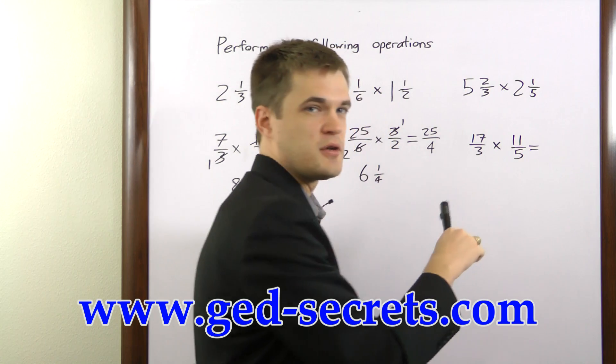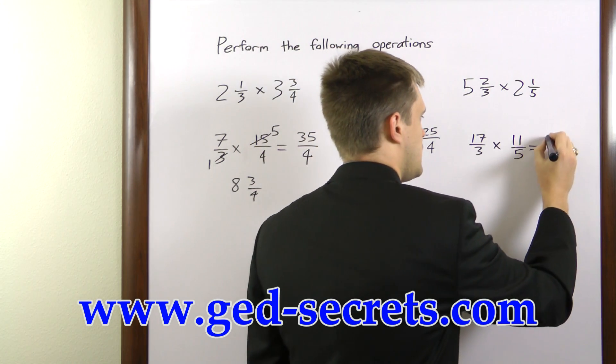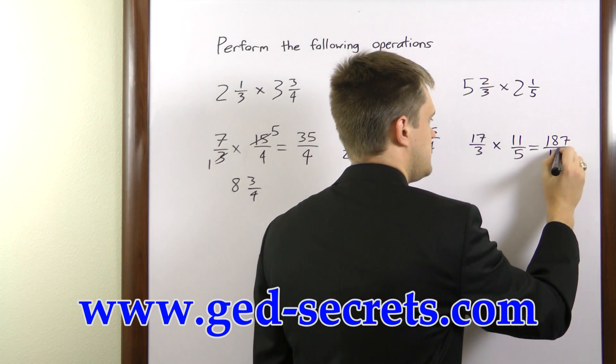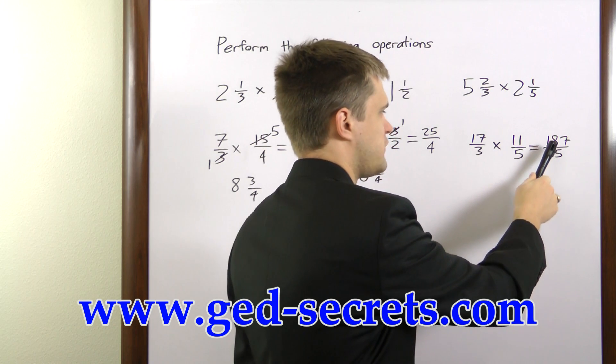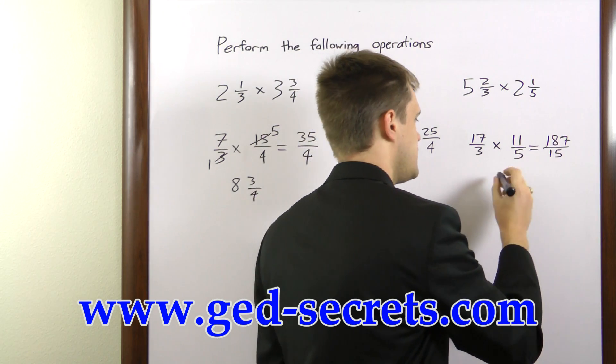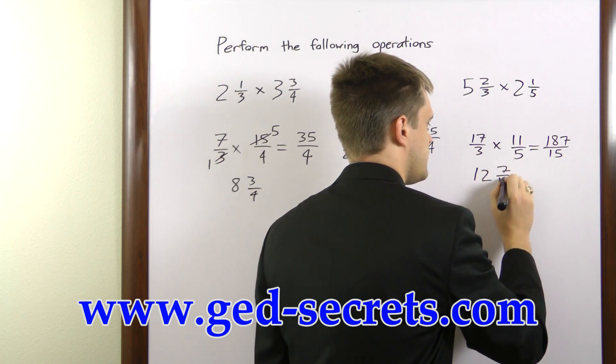There's nothing to cancel here, so we'll just go ahead and multiply. 17 times 11 is 187. 3 times 5 is 15. Now, 15 goes into 187, 12 times, with a remainder of 7. So the answer here is 12 and 7 fifteenths.